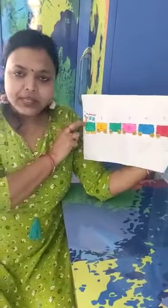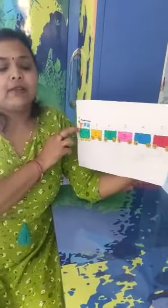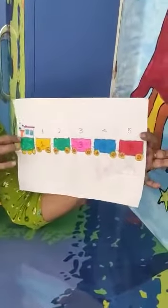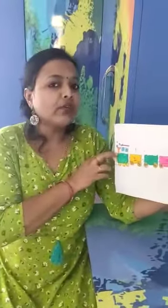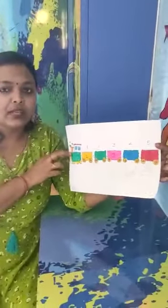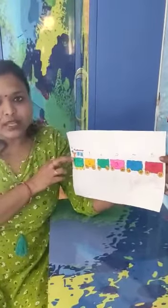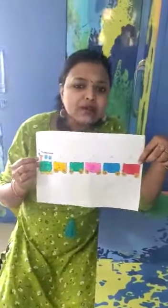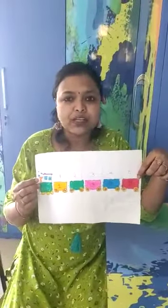You can make a train with the help of your parents. With the help of your parents, make the train and color it like this. And sing a song with me: Wheels on the train go round and round, round and round, all through the town.